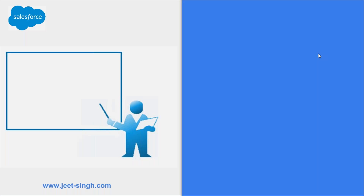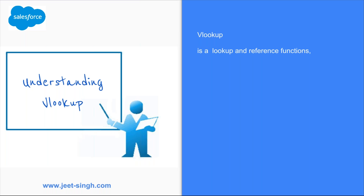Let's first understand what exactly this VLOOKUP function is. VLOOKUP is a lookup and reference function — one of those lookup and reference functions available in Microsoft Excel. It can be used when you need to find things in a table or a range, and then fetch the corresponding value from that table or range. Then you can use VLOOKUP.